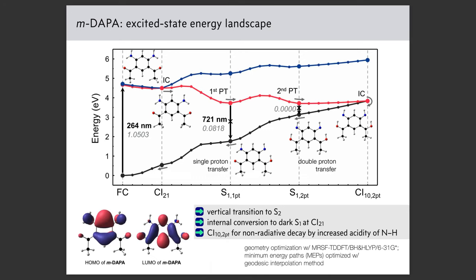What about the meta isomer, which is dark? Instead of going to the S1 excited state it goes to S2, and then there is rapid internal conversion — a crossover between S1 and S2. It falls down to S1 and goes downhill to the first proton transfer path but doesn't stop there. Eventually it reaches a conical intersection that is the consequence of double proton transfer. In chemical language: for the meta isomer, the NH group sits para to the acetyl group. Acetyl is electron-withdrawing, so it significantly polarizes the NH bond, making it much more acidic. If this proton can move, the molecule non-radiatively decays.